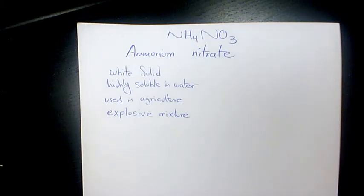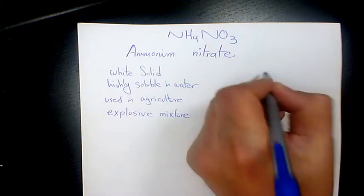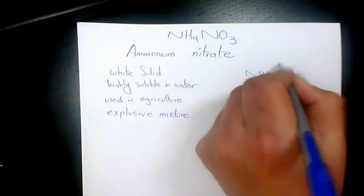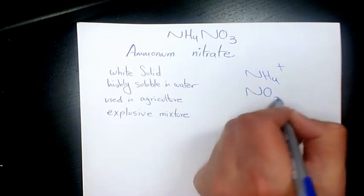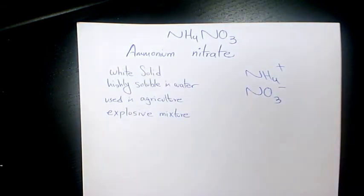What's up guys, this is Massey. Welcome to another video. In this video I want to talk about ammonium nitrate. What is ammonium nitrate? Ammonium nitrate is a chemical compound that contains ammonium and nitrate, and it's a nitrate salt of ammonium cation.